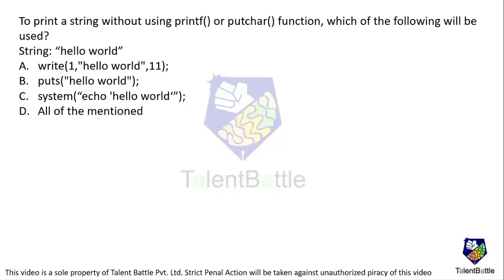Option B is `puts("Hello World")` — a system-defined function where you directly provide the string as an argument, and it prints "Hello World", so option B is also valid. Option C is `system("echo Hello World")` — a system call used in shell scripting where `echo` accepts the argument and transfers it to the system shell, also producing "Hello World" as output. All three options are valid, so the correct answer is option D — all of the above.